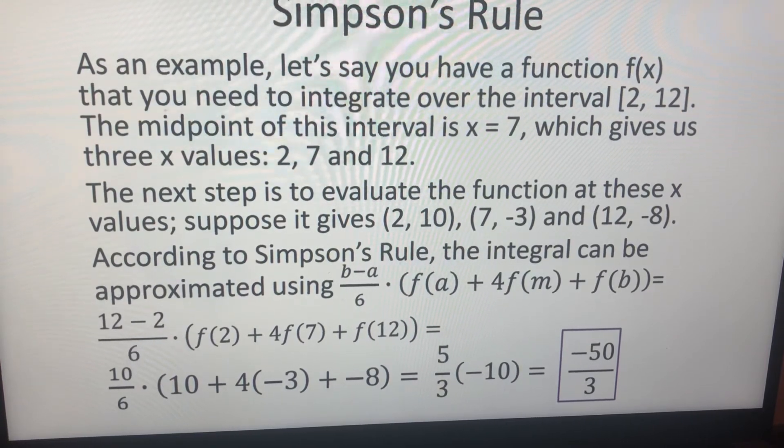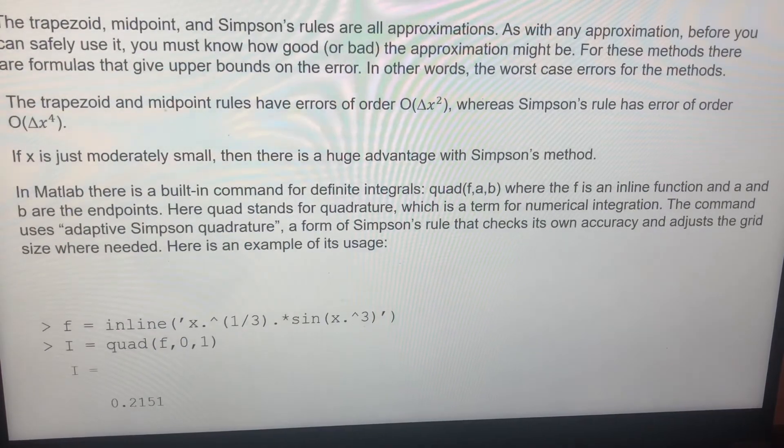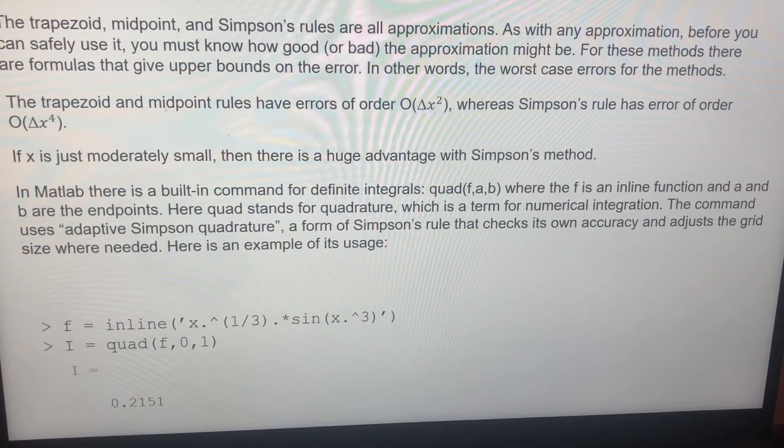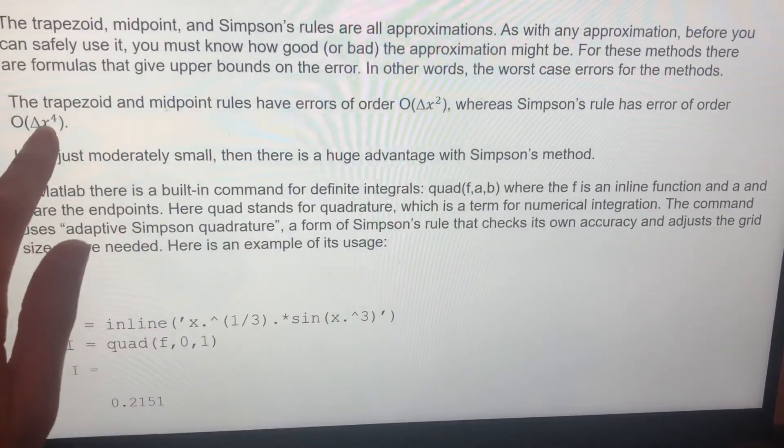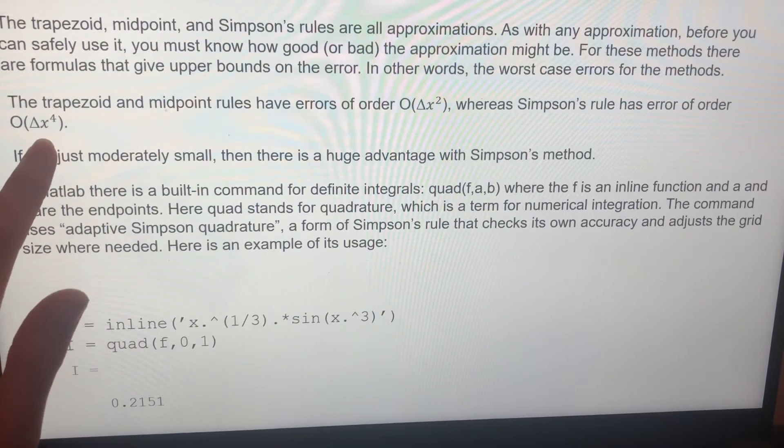This is just one simple example. And if you check that, the errors: trapezoid and midpoint rules have errors of order delta x squared, and Simpson's has delta x to the fourth. So Simpson's is working very well most of the time.